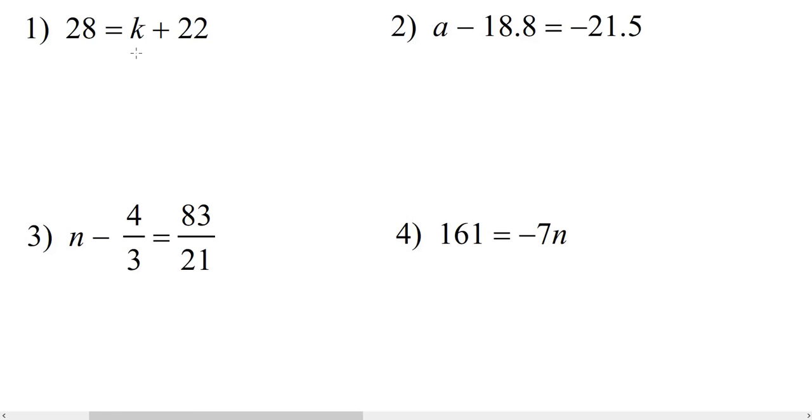In order to isolate k, we need to get rid of positive 22, so we're going to subtract 22 from both sides. On the right, these 22's cancel each other out, leaving us with k. And on the left, 28 minus 22 is 6.